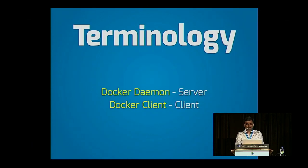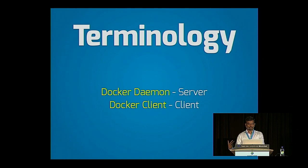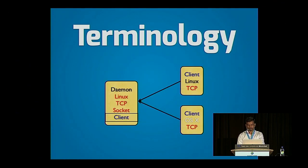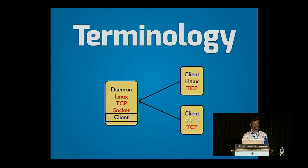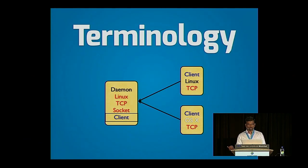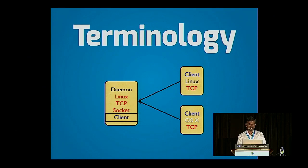Docker has two components: the server component — the daemon — which has to run on a Linux machine, and the client component. The server talks to clients in two ways: using a Unix socket if the client is on the same machine, or through a TCP socket if the client is on a different machine. Clients are available for Linux and OSX and you can use them to talk to a daemon running on a separate Linux machine.